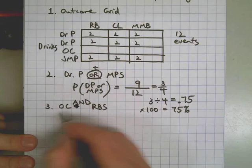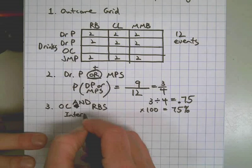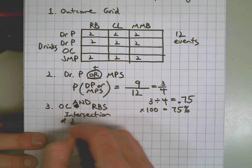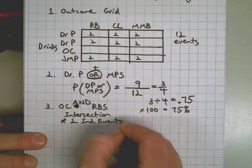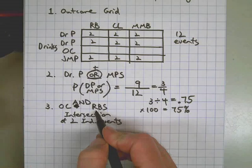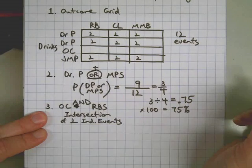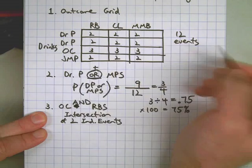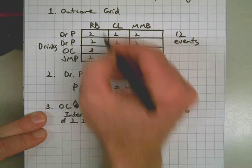Orange Crush and a Roast Beef Slab. This means we're talking about the intersection of two independent events. By independent events, I mean we have drinks here and we have snacks here. One thing does not affect the other. I'm going to use the number three up here in the outcome grid. Orange Crush would happen there.